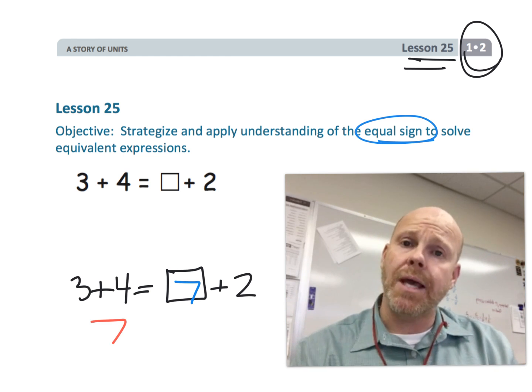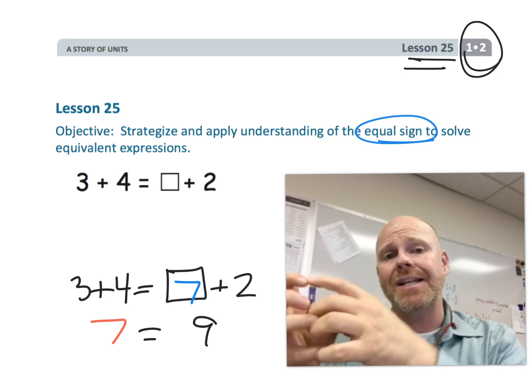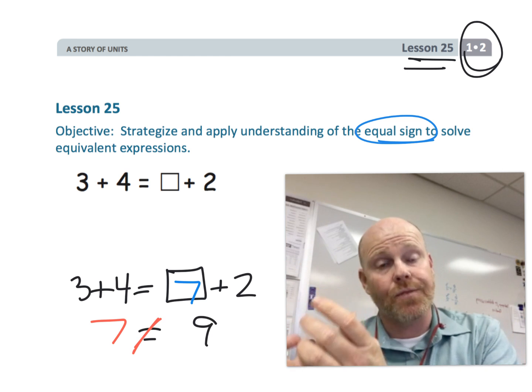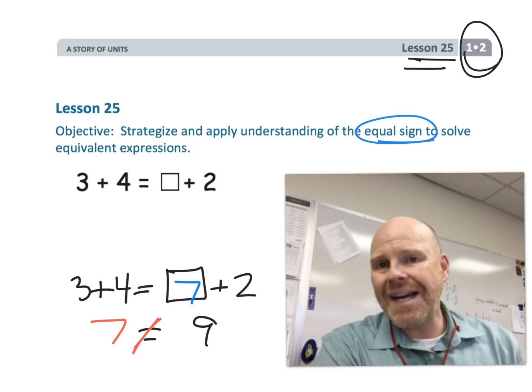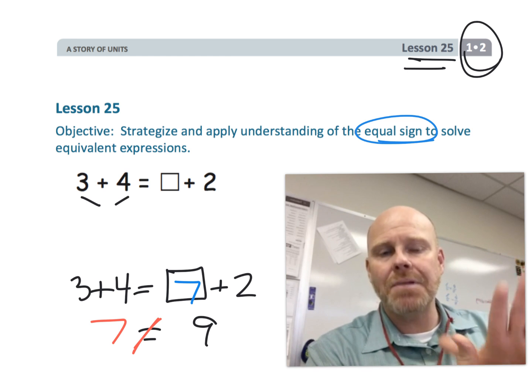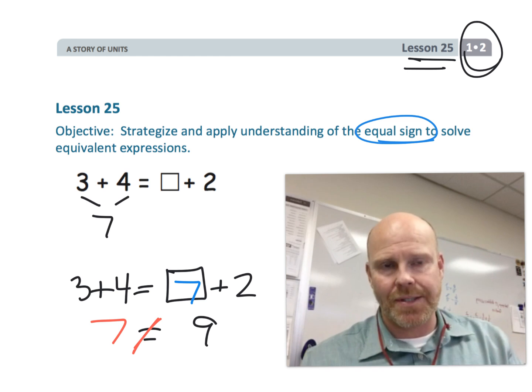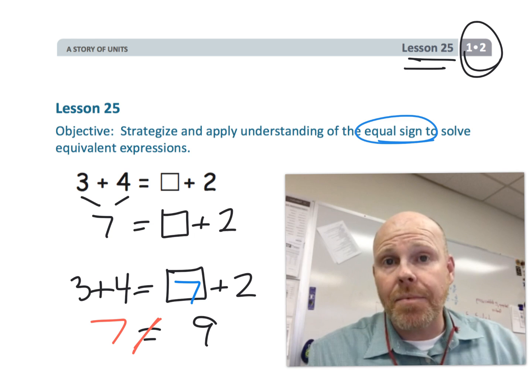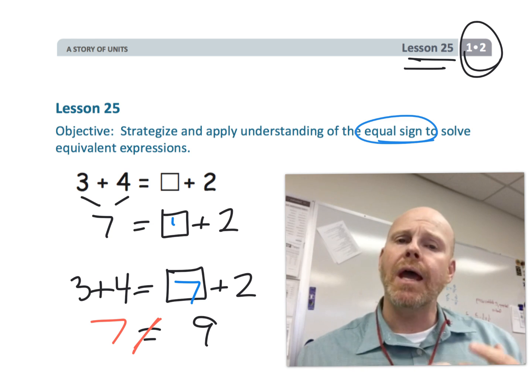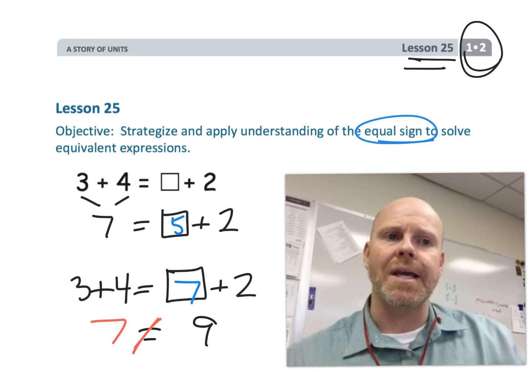So what we want students to be able to do is understand that the left side is a problem. In this case, 3 plus 4 is 7, and so the right side is something plus 2 equals 7. Oh, that box, that something must be a 5, and that's the point of this lesson. So let's get going.